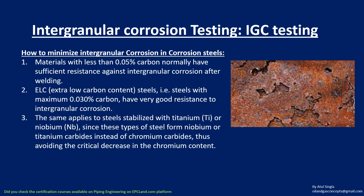Another effective option is introducing titanium or niobium elements into the stainless steel. These elements preferentially form titanium carbides instead of chromium carbides, so chromium content is not depleted. If carbon is high and chromium carbide formation is likely, adding titanium or niobium leads to titanium carbide formation instead, maintaining corrosion resistance and minimizing intergranular corrosion.